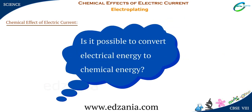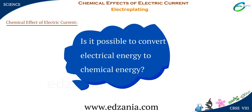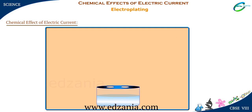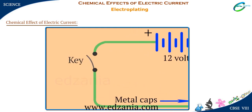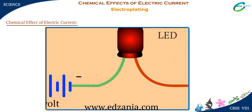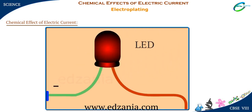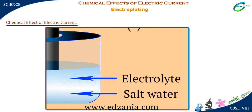Is it possible to convert electrical energy to chemical energy? Let's find out by performing a small activity. Consider a glass tumbler with a plastic cover which has two small holes in it. Put two carbon rods in the holes and complete the circuit with the help of a key, battery, and LED. A substance that is capable of conducting electricity in liquid form is called an electrolyte.